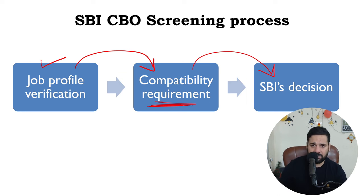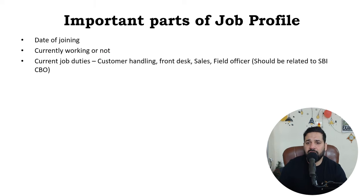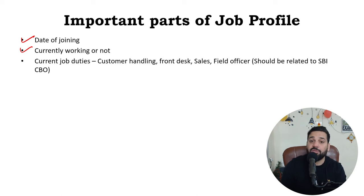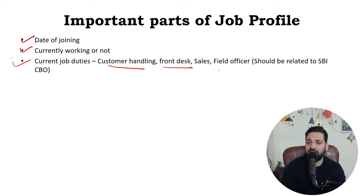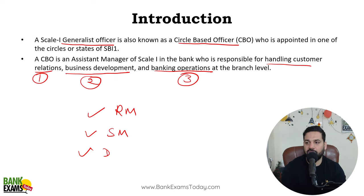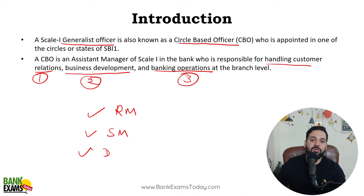Here are the important parts of the job profile. You need to mention your joining date and whether you are currently working or not — many candidates are not working right now, so you must mention it. List your current job duties such as customer handling, front desk, sales, or field officer roles. Your existing job role should align and be compatible with the three CBO duties: customer relations, business development, and banking operations.